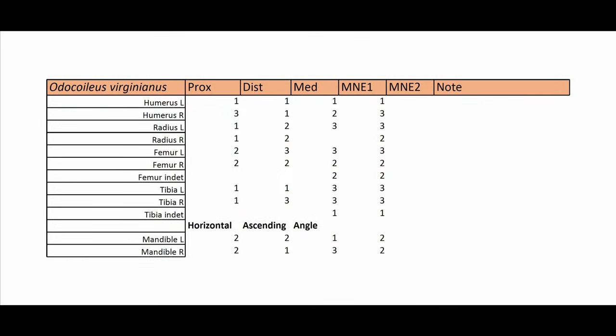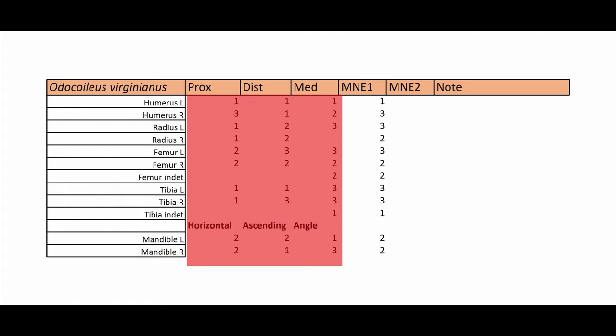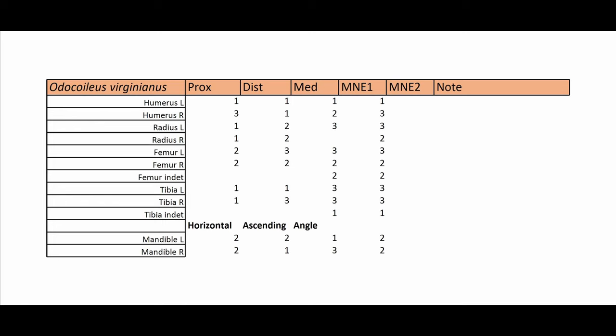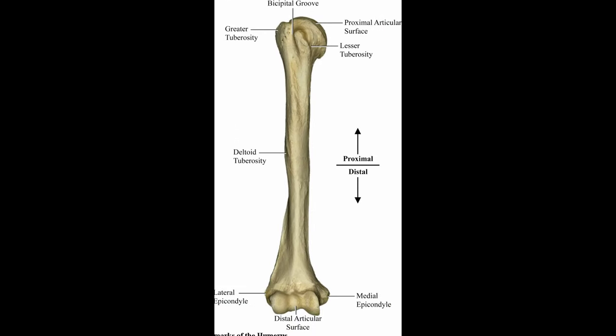So at the top here, we have our species name, Odocoileus virginianus, white-tailed deer. And we have columns for the proximal, distal, and medial counts. How many of our bone fragments belong in each of those categories. So the proximal is the part of the bone that is closest to the spinal column. And the distal is the part that's farthest away from the spine. So on your upper arm, the humerus, the shoulder portion is the proximal, and your elbow is the distal end. And of course, you've got the medial section in the middle.